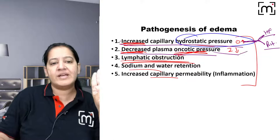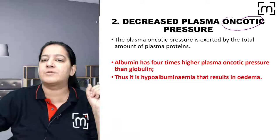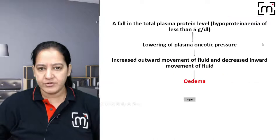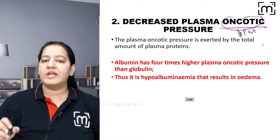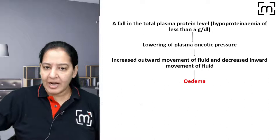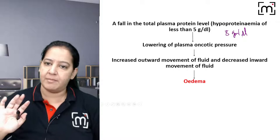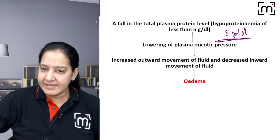Now the second cause — decreased oncotic pressure. Tell me three examples where the patient has edema because of decreased protein. The normal total protein in blood is 8 grams per deciliter. If it falls to 5 or less, the person will develop edema. When protein decreases, oncotic pressure decreases. Hydrostatic remains the same, but inward force decreases — so more fluid stays in the tissue. What is the main blood protein? It is albumin.